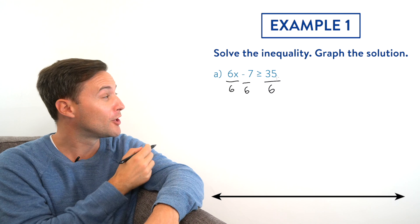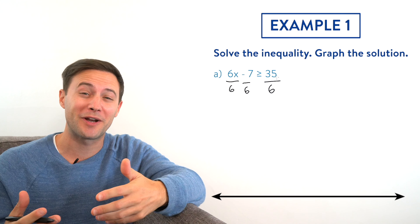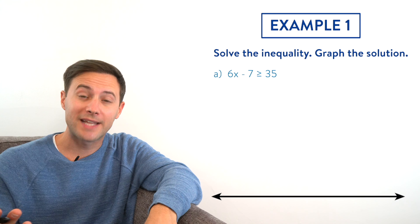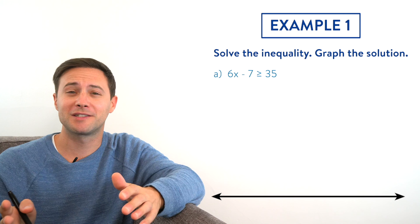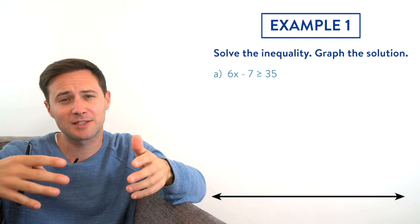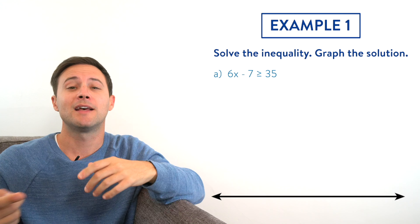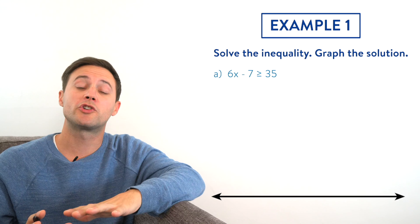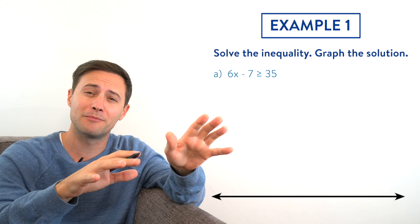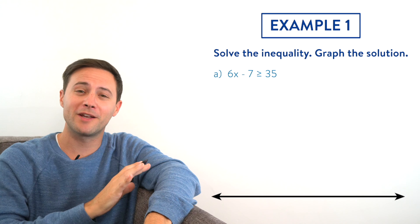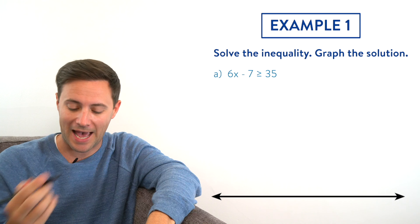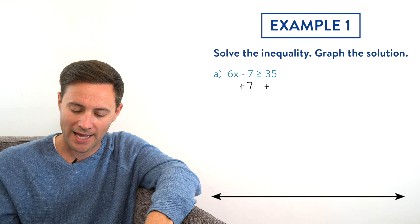6x minus 7 is greater than or equal to 35. First thing I need to get that x alone — it's being multiplied by 6 and we're also subtracting 7. The question is what do I get rid of first: that minus 7 or the 6? If I try to divide both sides by 6 I could, but I'm going to make my life a lot harder, because all the terms on the left side including that minus 7 would have to be divided by 6. We can do it but it's not very efficient.